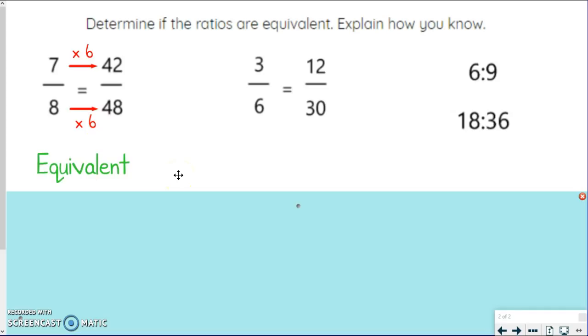So these are equivalent. And you should be able to explain how you know that because I just talked through it. So they're equivalent because you multiply both numbers by 6 to get the next ratio. So let's look at this next one. Now I could look across. I could look up or down. I'm going to choose to look across first because that just was what makes sense in my head.